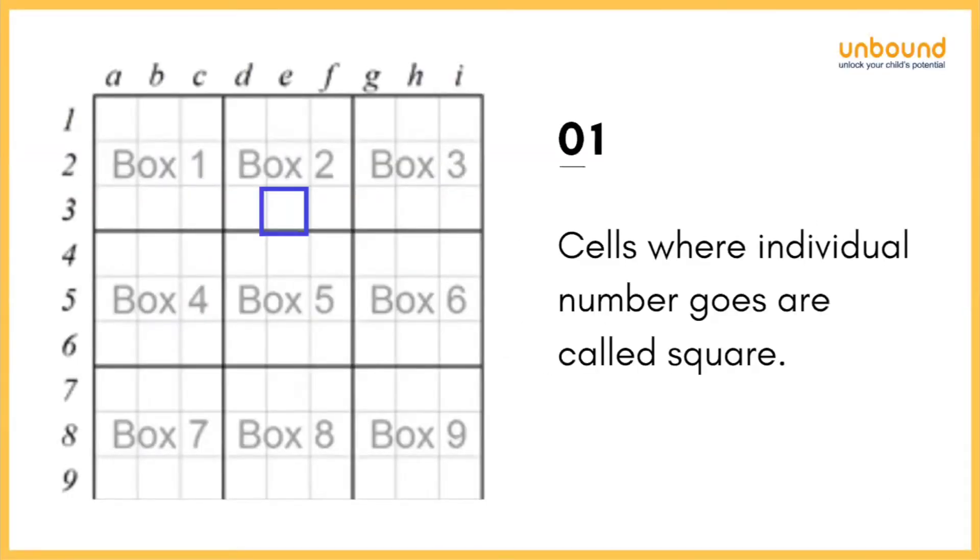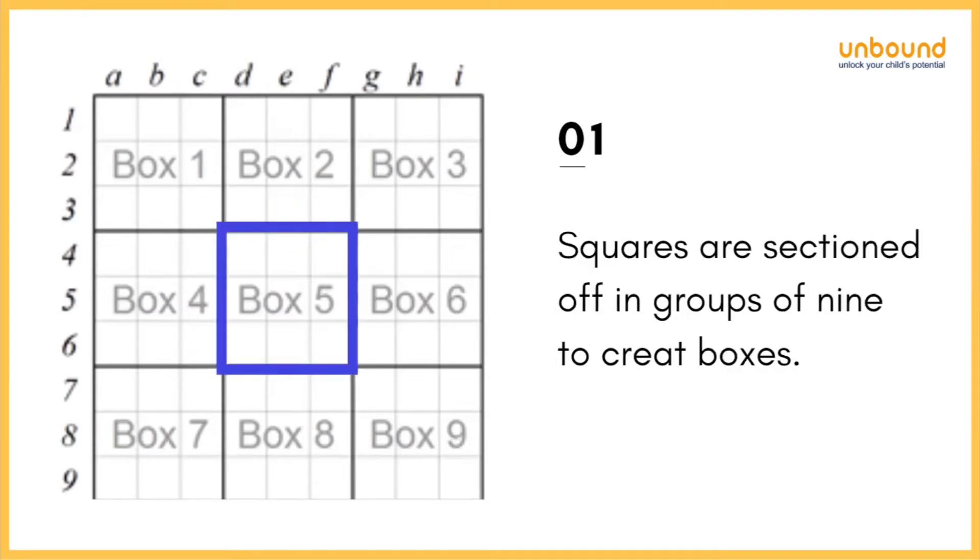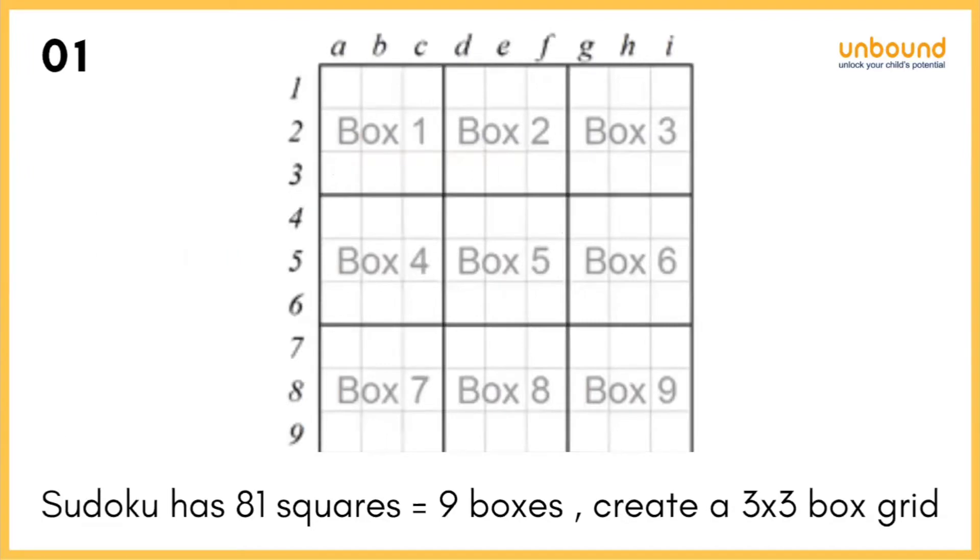Now, these boxes are made up of squares. This blue box is called as cells. And these cells have an individual number of its own, also called as square. Now, when these cells are connected in a three by three form, these squares get bigger and create a box in Sudoku. So, basically, Sudoku has 81 squares, 81 cells and nine boxes with three by three box groups.